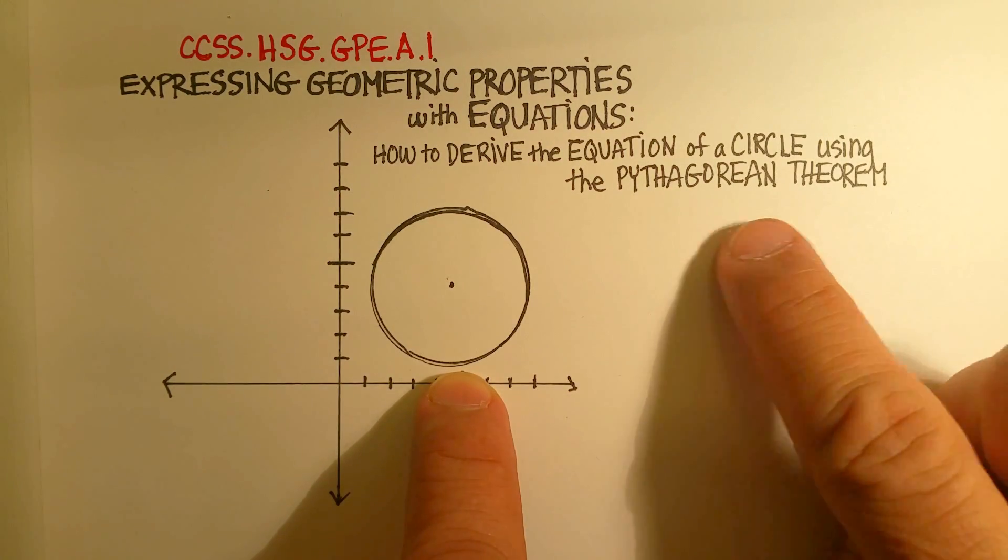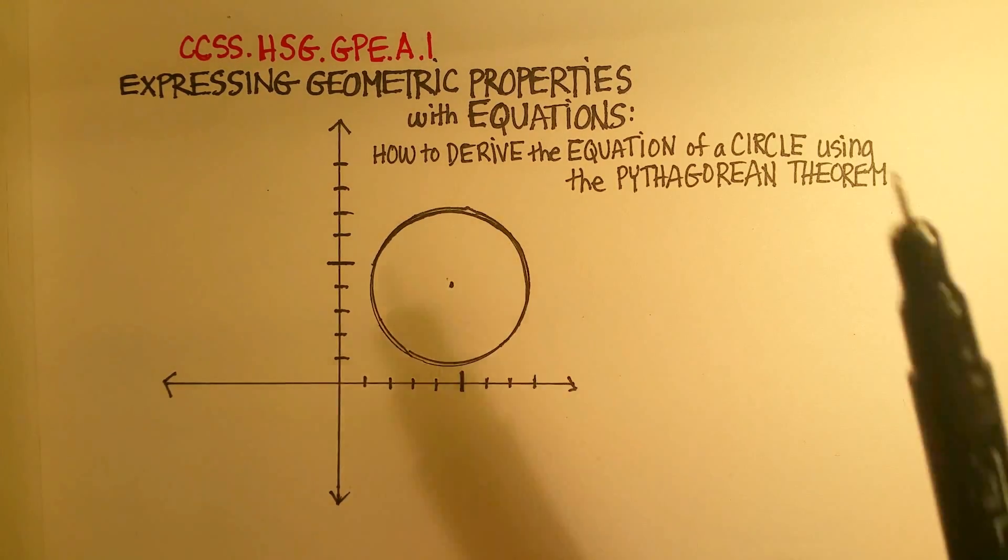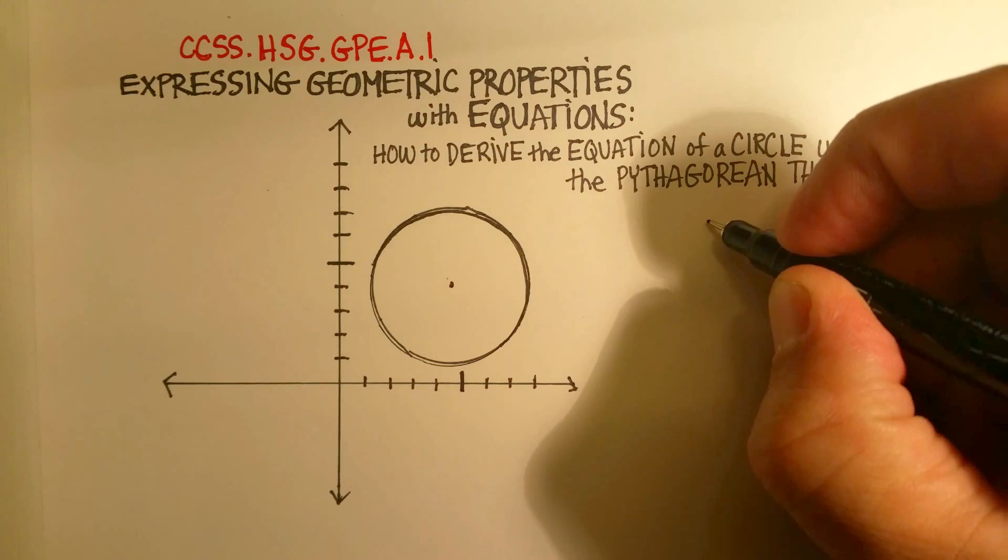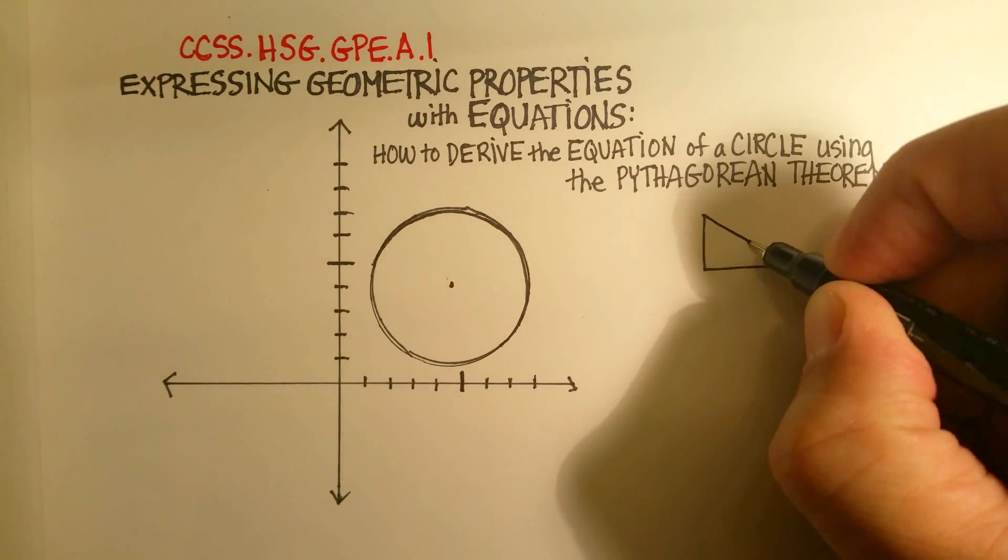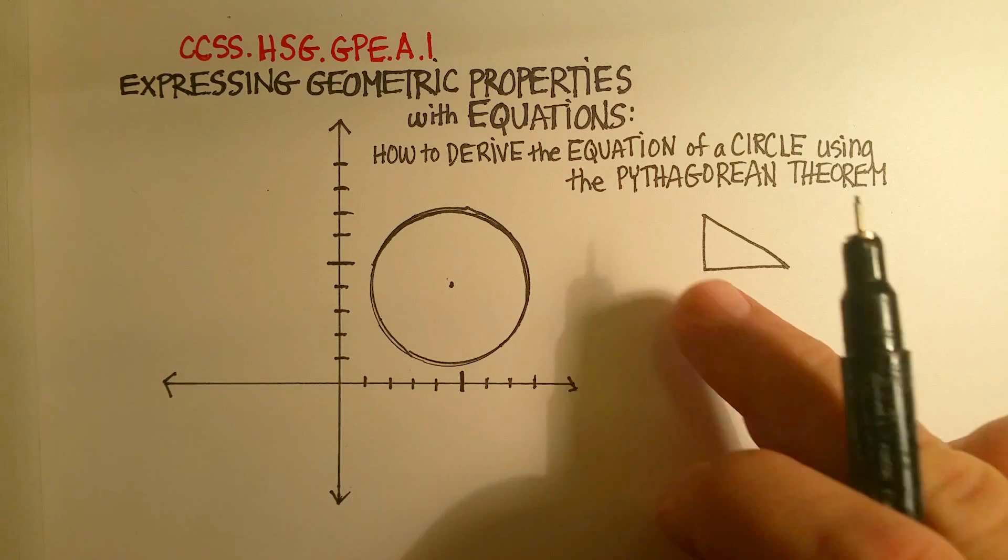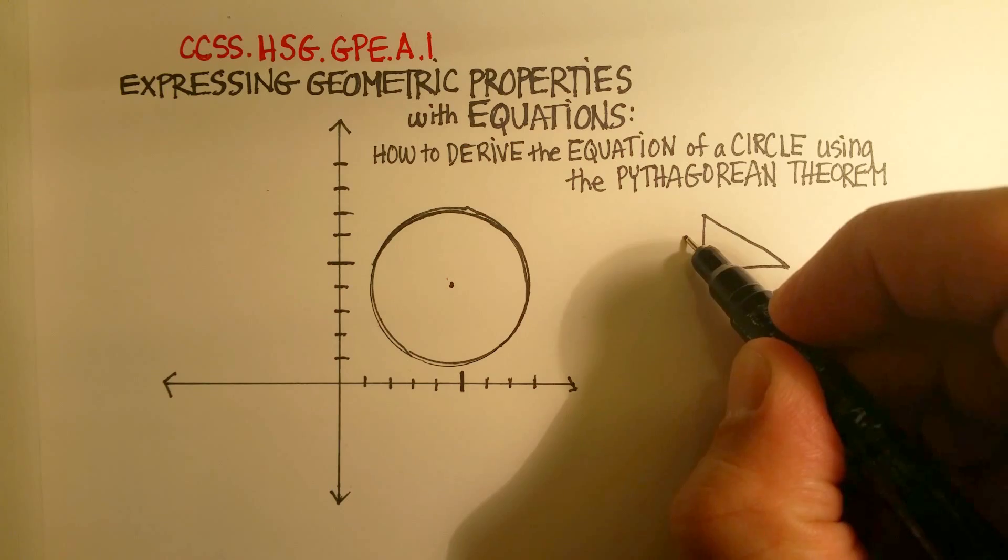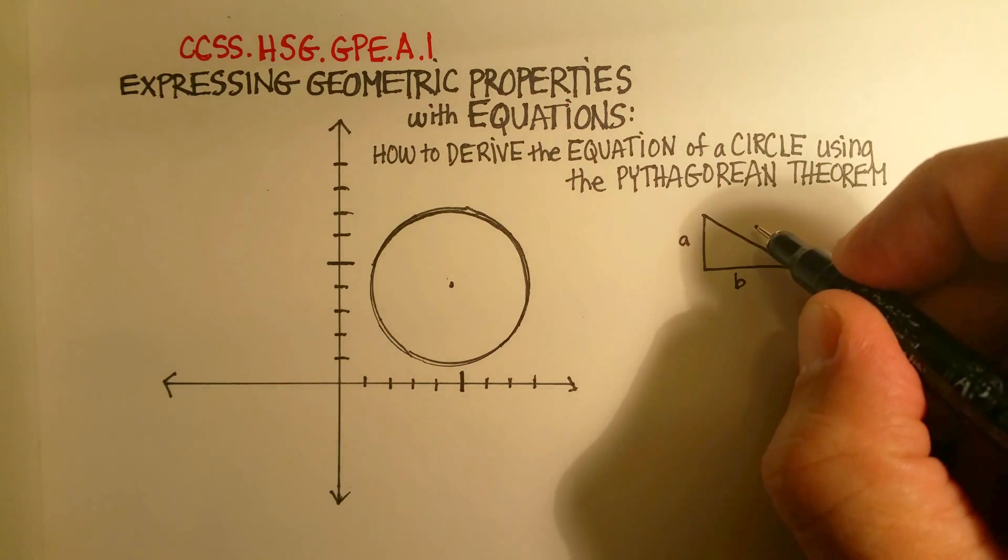Let's start with a brief review of the Pythagorean Theorem. Remember that the Pythagorean Theorem basically says that in any right triangle—let's just draw a quick right triangle here—we can find the length of any side of a right triangle by squaring the two short sides and having it equal the square of the hypotenuse.